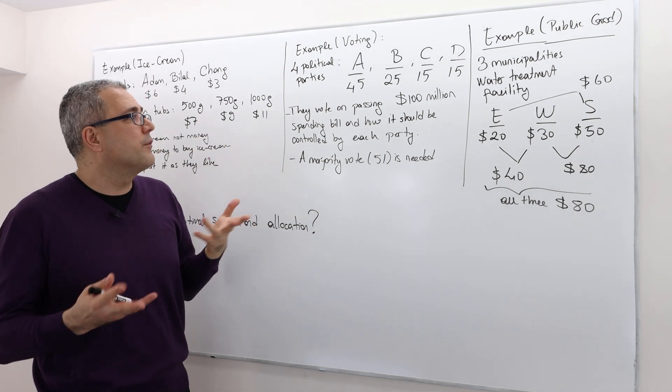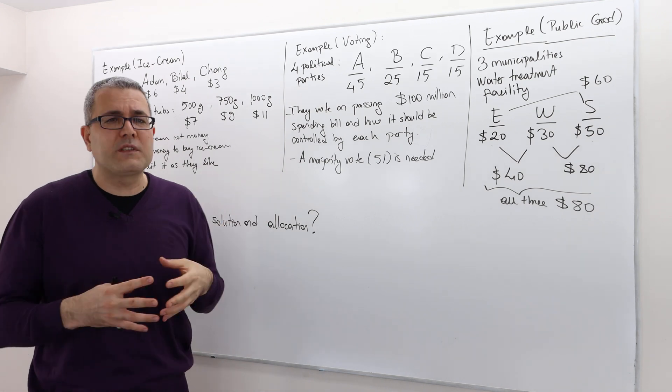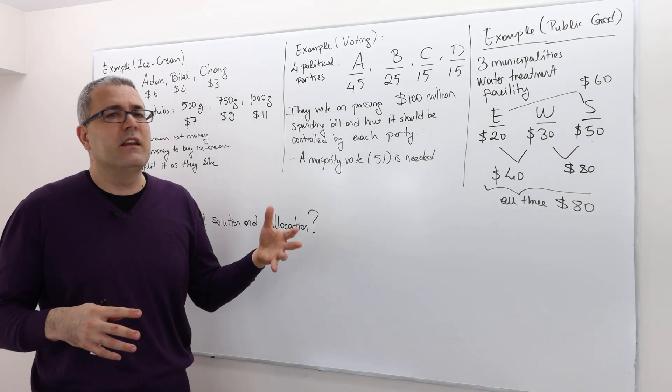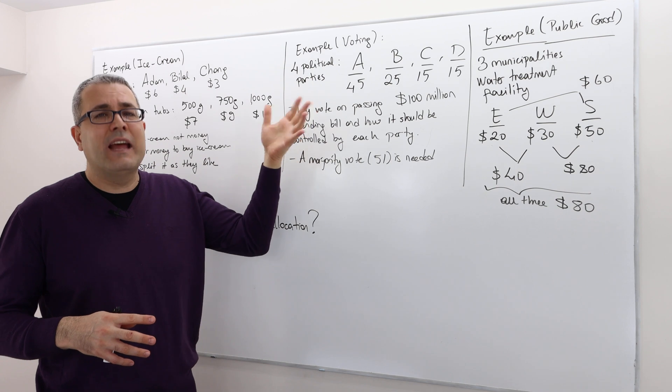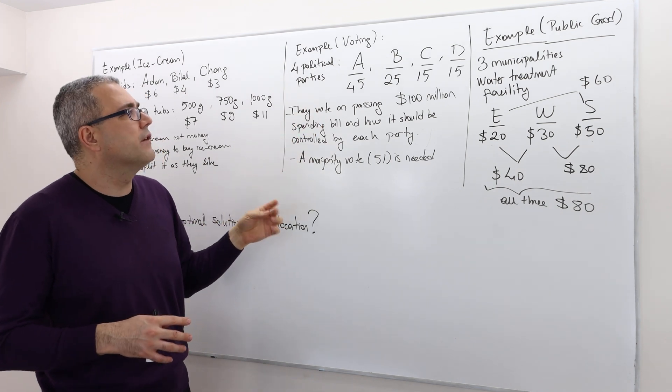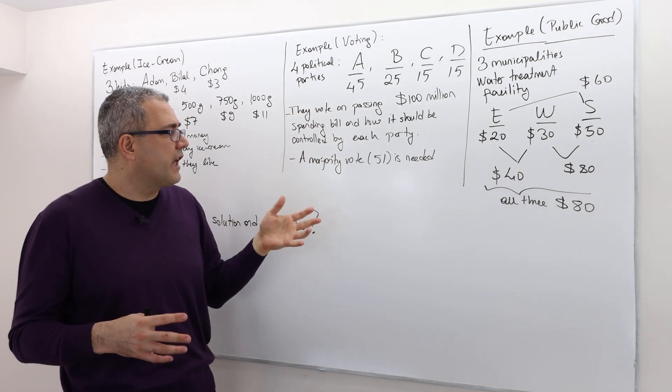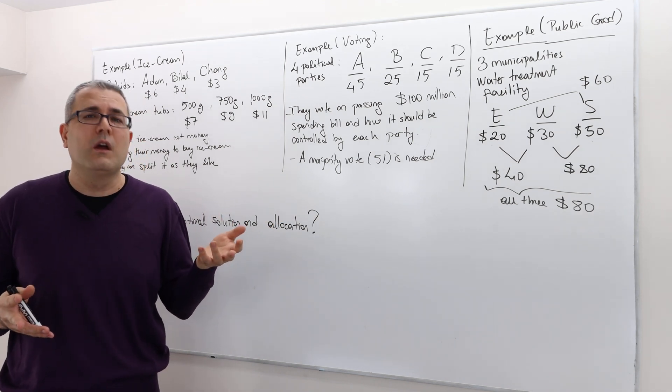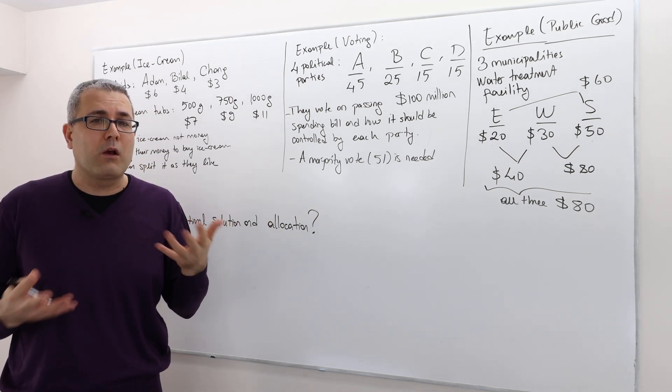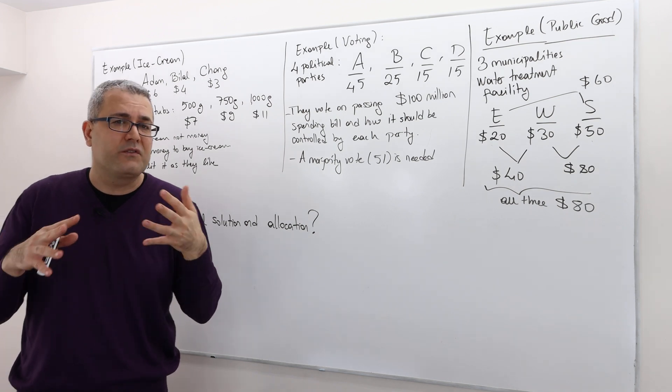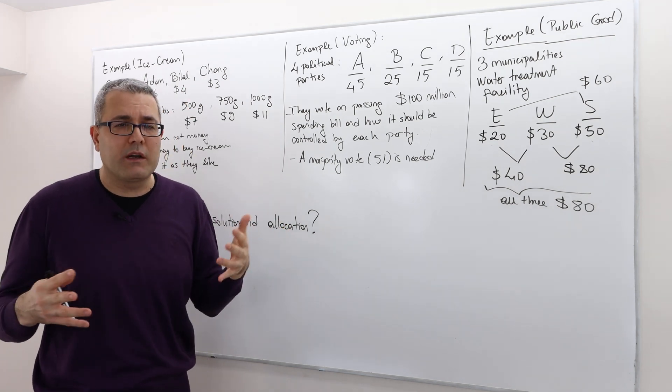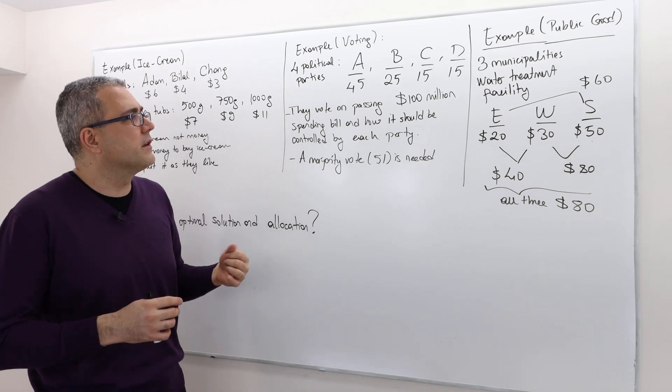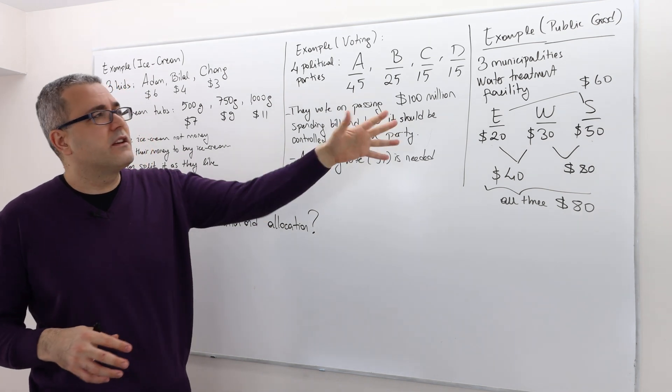So as you see, no single party can get the majority, but they have to form some coalition and then they may achieve the majority vote. So the question is, once again, what is the optimal solution? Meaning which parties are going to form a coalition and how they're going to split the 100 million dollars between the parties?